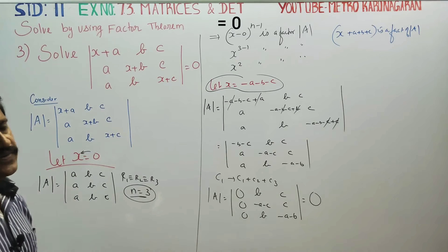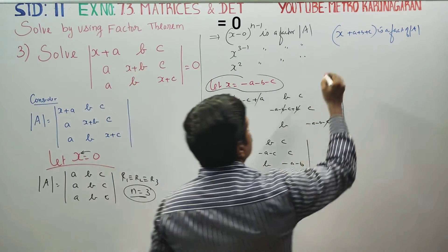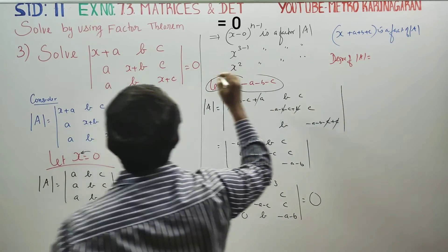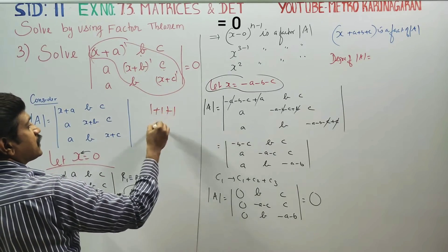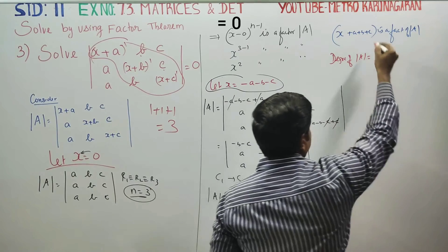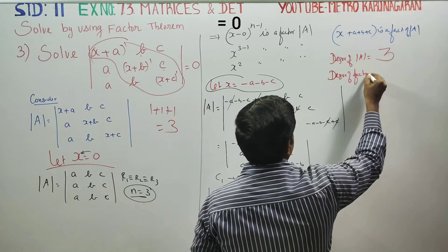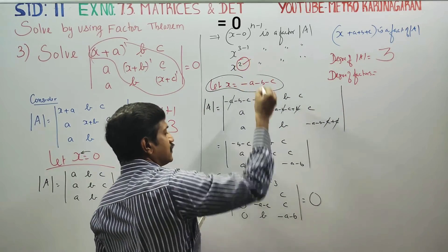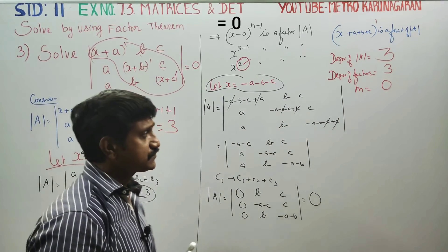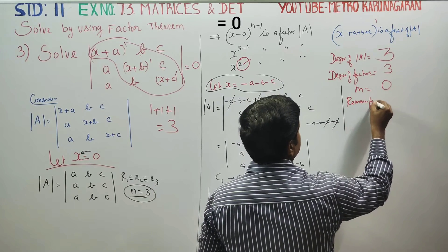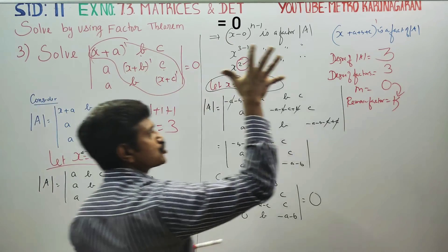Now we do degree comparison. The degree of determinant A is 3. The factors found are x squared and (x + a + b + c), which together have degree 2 plus 1 equals 3. So m equals 3 minus 3 equals 0. The remaining factor is a constant k, meaning the remaining factor is simply k.